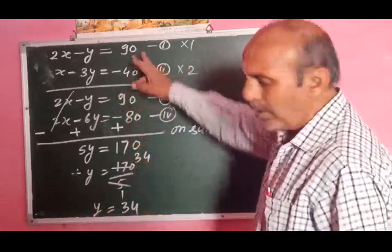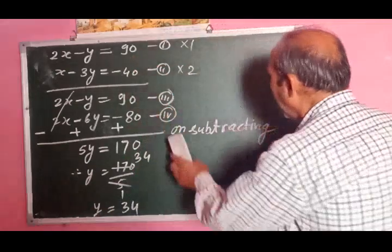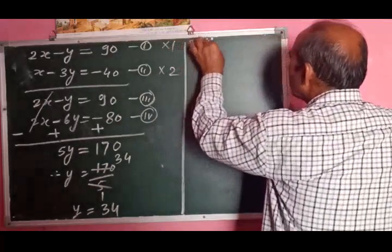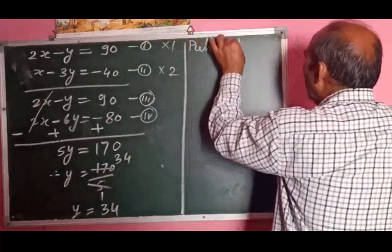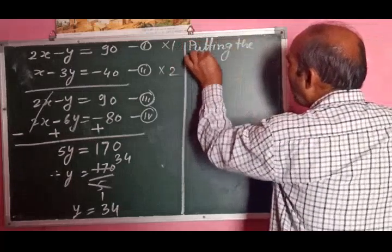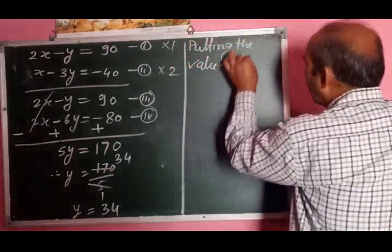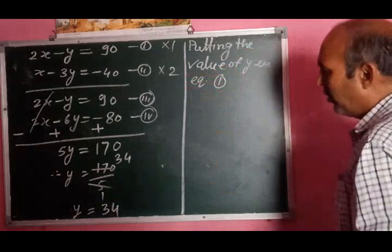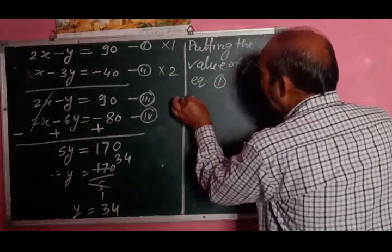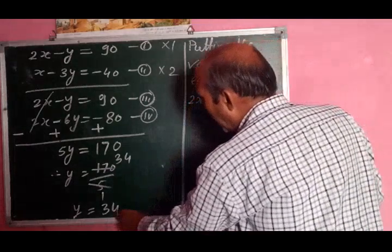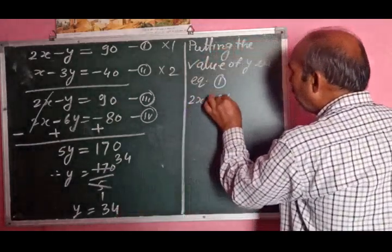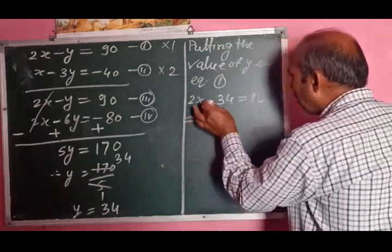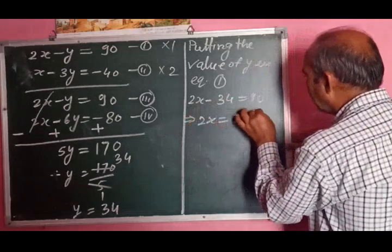अब Y की value किसी भी equation में रख सकते हैं. Putting the value of Y in equation first: 2x - 34 = 90, तो 2x = 90 + 34 = 124.